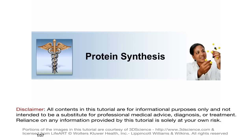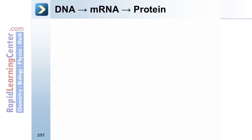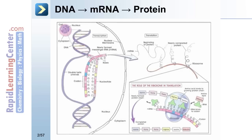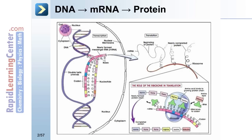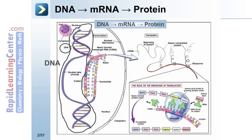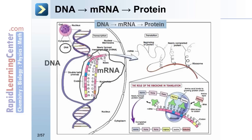Protein Synthesis: DNA to mRNA to protein. Let's take a look at the process of going from DNA to mRNA to protein. In this schematic, we can see the DNA here in purple. The mRNA is being copied from the coding strand of the DNA. Once the mRNA has been copied and edited, it's shipped into the cytoplasm, shown here.